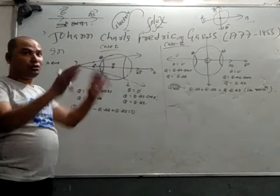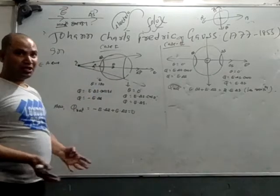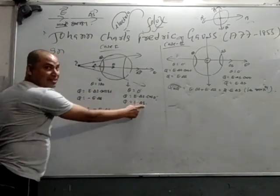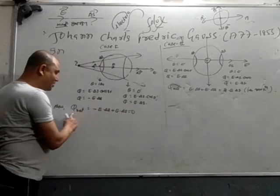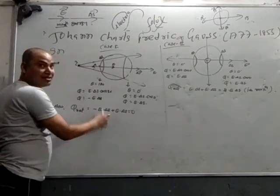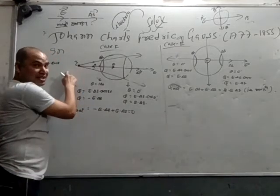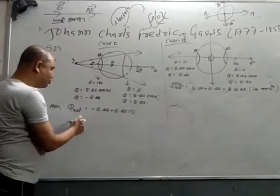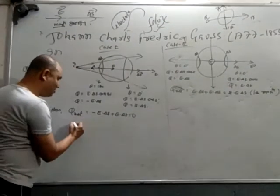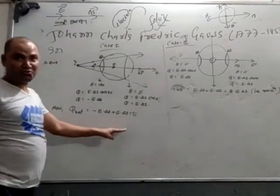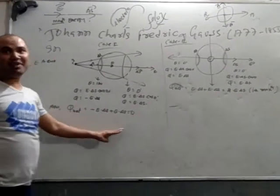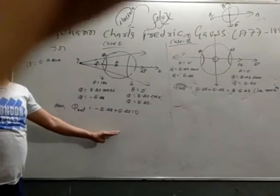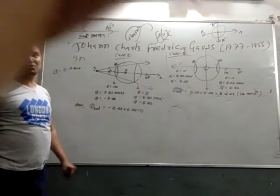Now the total flux: total flux will be minus E·S plus E·S. Net flux will be zero. Mathematically this is the proof: if the charged particle is kept outside the surface, the net flux will be zero.